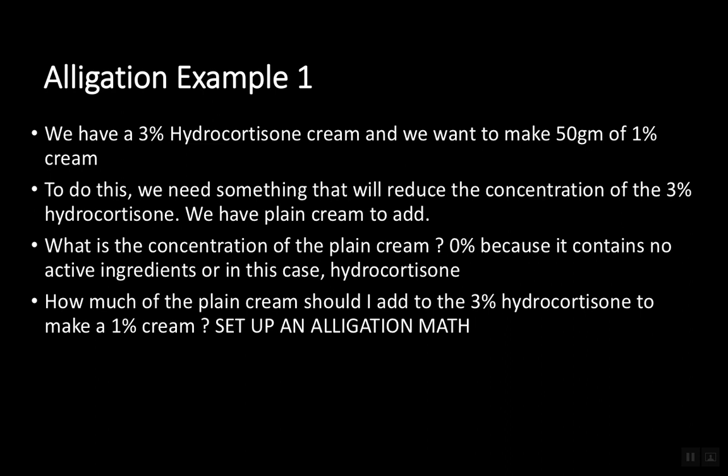So we have a 3 percent hydrocortisone cream, and we want to make 50 grams of a 1 percent cream. To do this, we need something that is going to reduce the concentration of the 3 percent hydrocortisone cream. That's the only way you could get 1 percent — you need something with a lower concentration to bring that 3 percent down. Fortunately, we have plain cream. This plain cream has no hydrocortisone, so it's 0 percent. How much of the plain cream should I add to the 3 percent hydrocortisone to make the 1 percent cream? That's when you set up your allegation map.